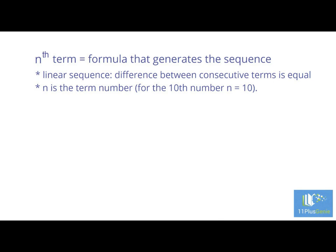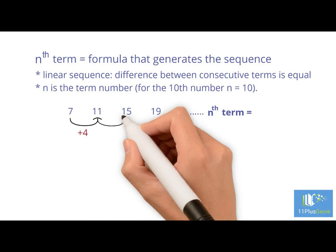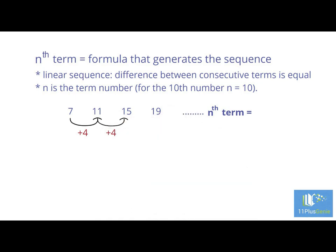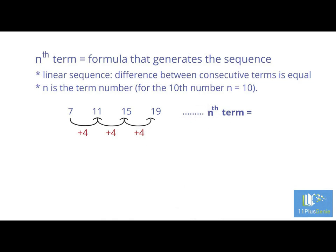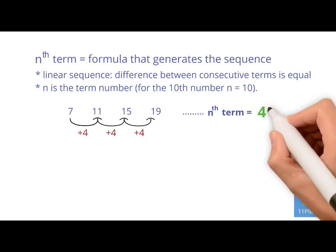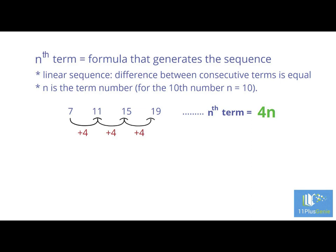Finding the Nth term. To find the Nth term for a number sequence is quite easy. Look at the following number pattern: 7, 11, 15, 19. First find the difference. From 7 to 11 is add 4, from 11 to 15 is add 4, and from 15 to 19 is add 4. The rule for the sequence is plus 4. This is the 4 times table and we can immediately write down 4N.